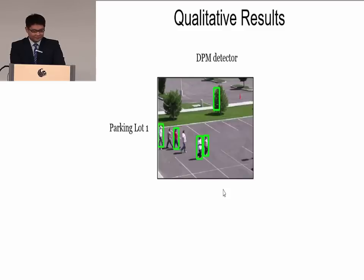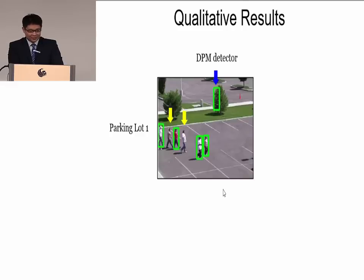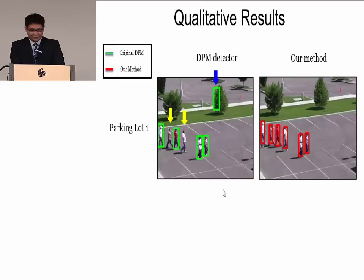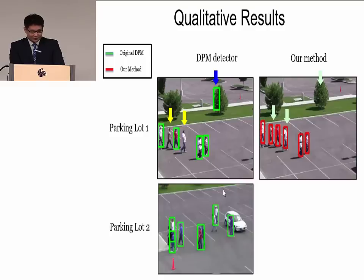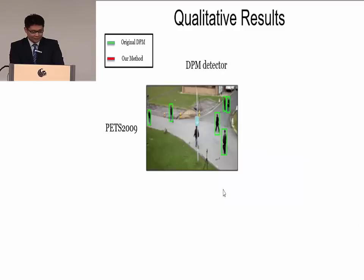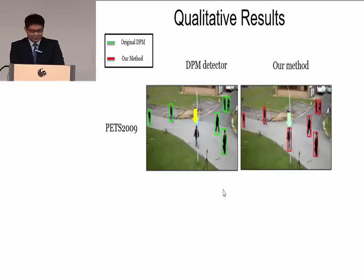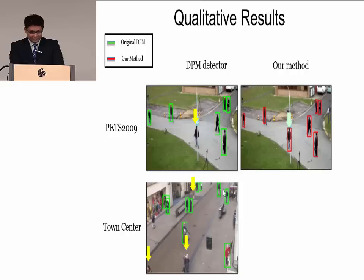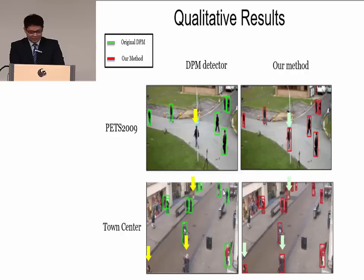We tested our method on six video sequences. For the parking lot 1 video, the green boxes show DPM detector results — there are two missed detections and one false detection. Our method fixed all the problems. For parking lot 2, there are three missed detections, and our method fixed them all. For the PETS 2009 sequence, there is one missed detection and our method can detect this person. For the town center dataset, there are three missed detections and our method can detect them.